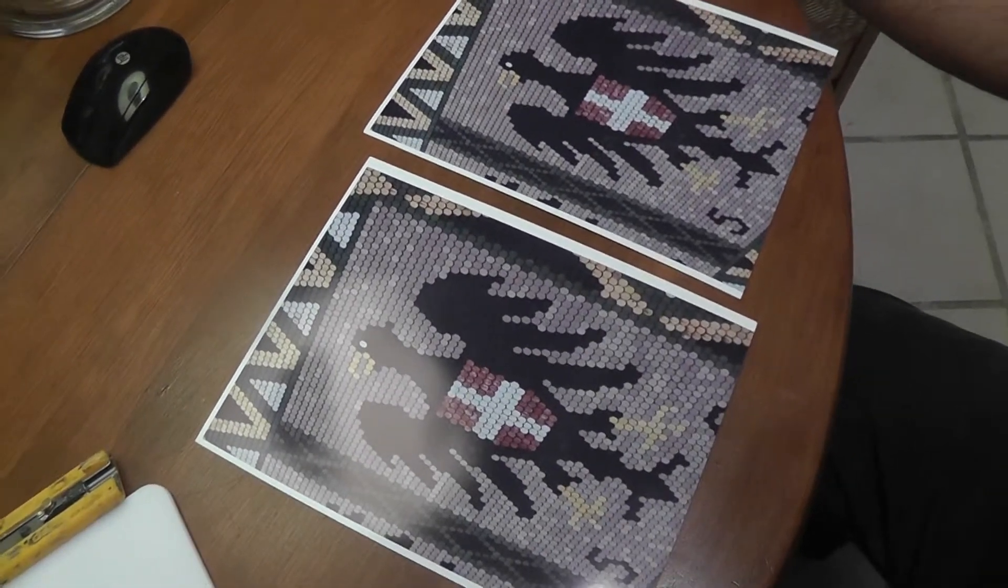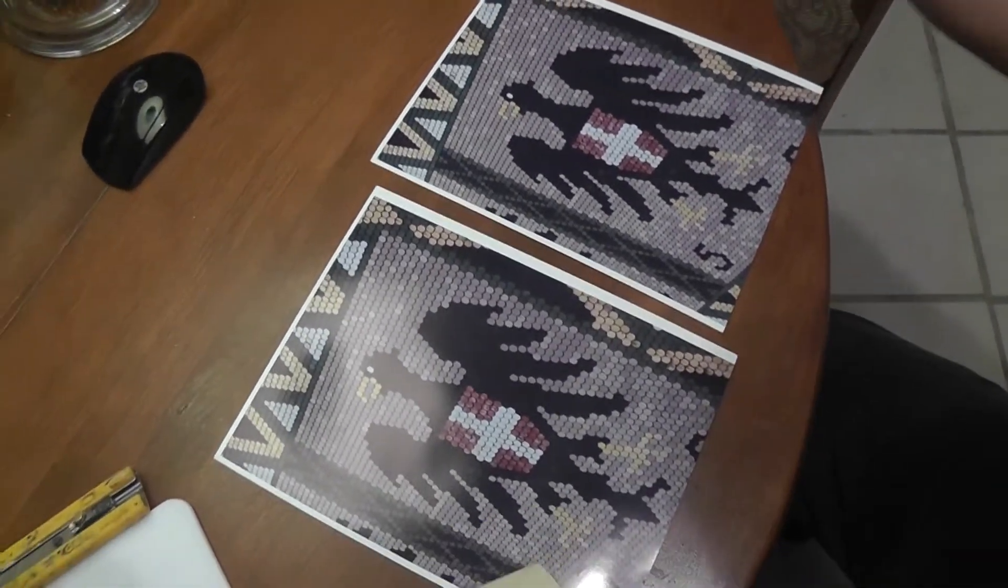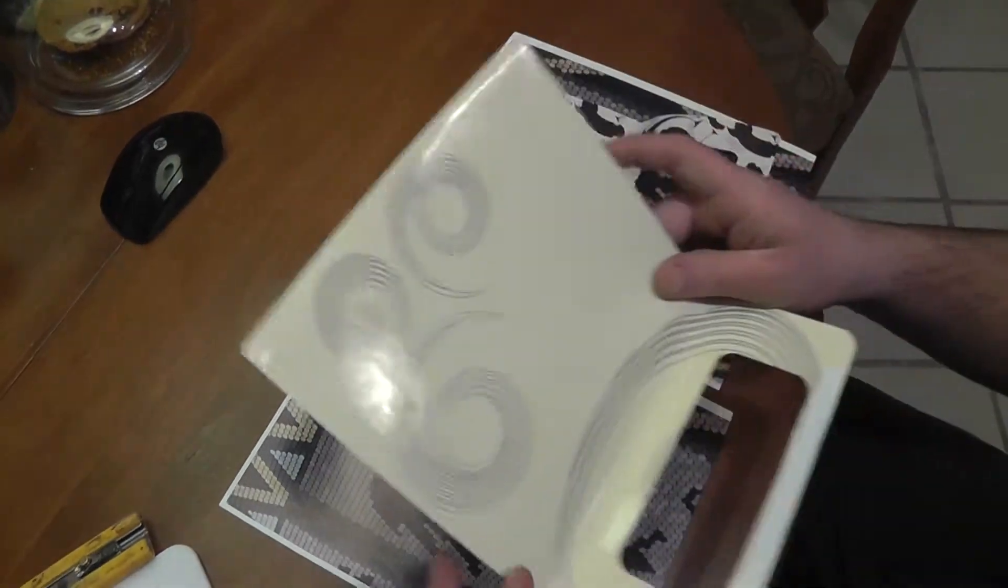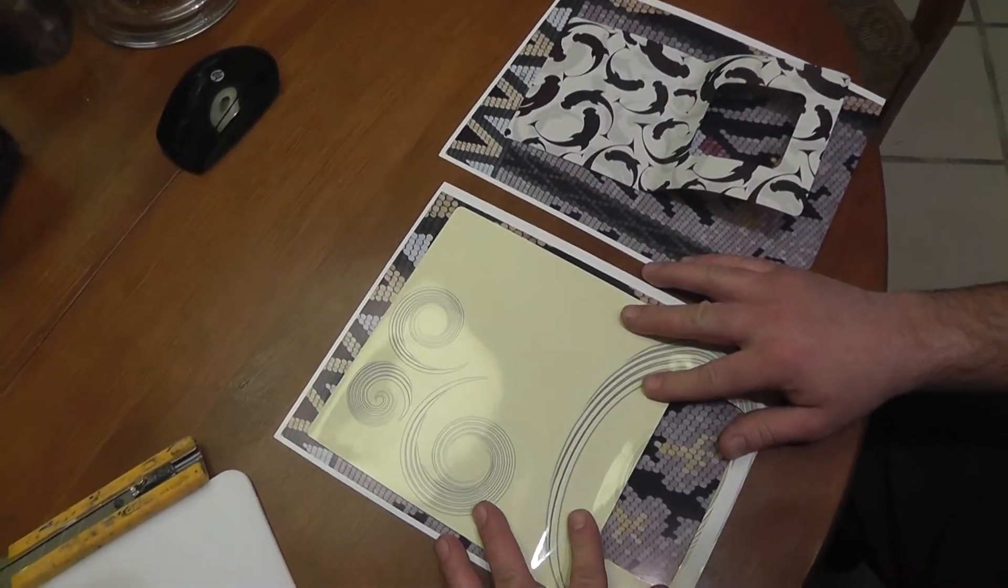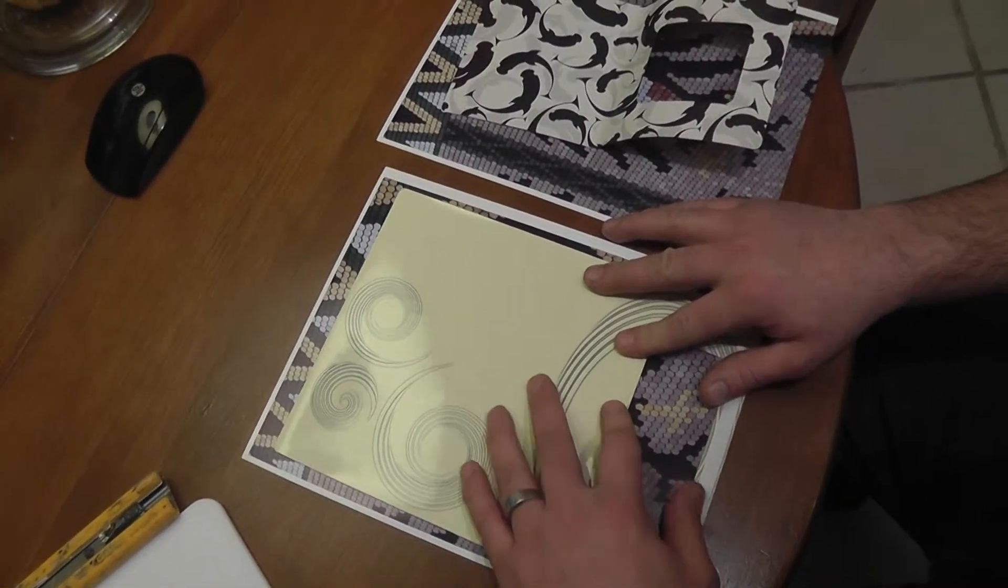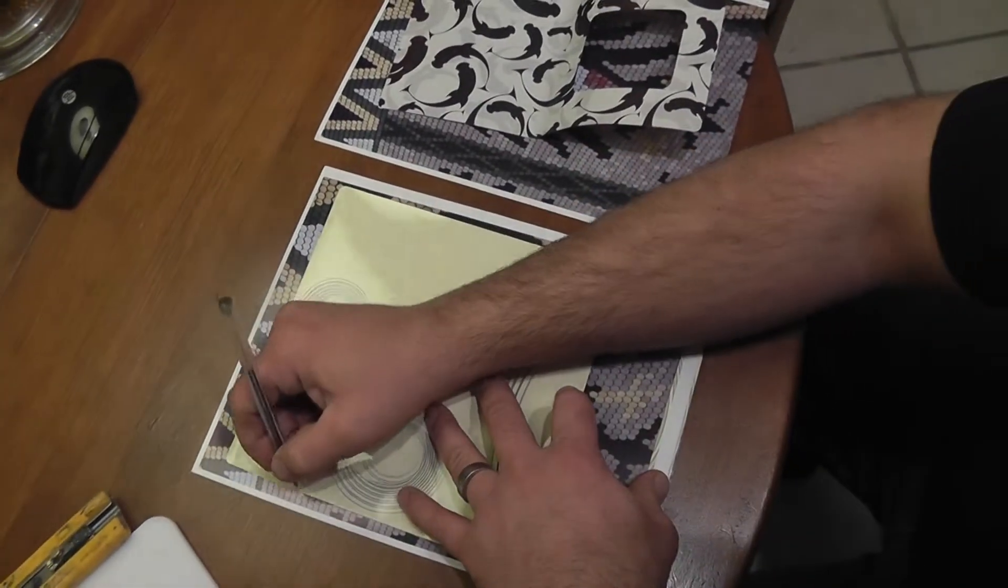Okay we have our two photographs here. I'm going to take the backgrounds that came with the tank and kind of line them up where you want them. Once you have them lined up, I'm going to trace them out onto the photograph.